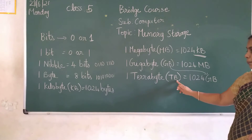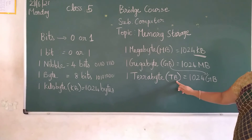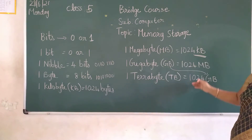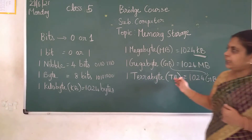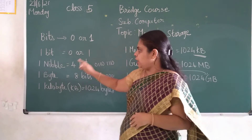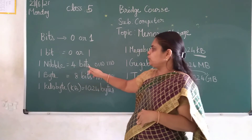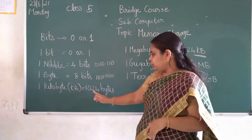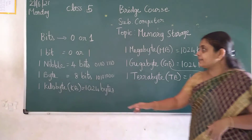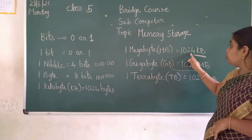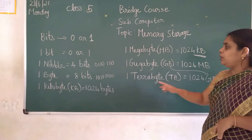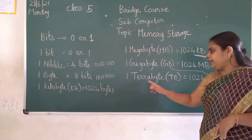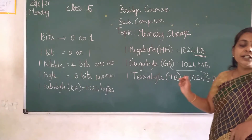1 terabyte, short form is TB. So starting from the lower level, it comes to the heavier level. Let us see: 1 bit is equal to 0 or 1. 1 nibble is equal to 4 bits. 1 byte is equal to 8 bits. 1 kilobyte is equal to 1024 bytes. 1 megabyte is equal to 1024 KB. 1 gigabyte is equal to 1024 MB. 1 terabyte is equal to 1024 GB.